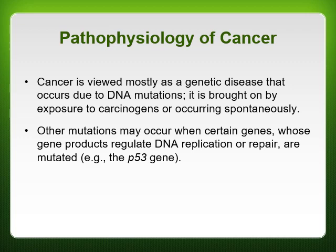As far as pathophysiology goes, cancer is viewed mostly as a genetic disease that occurs due to DNA mutations, brought on by exposure to carcinogens or occurring spontaneously. We all have cancer cells in our bodies, but they won't necessarily grow out of control. If they continue to mutate or are exposed to carcinogens that cause them to start growing, that's usually the problem. Other mutations can occur when genes that regulate DNA replication or repair get mutated — an example is the p53 gene, associated with cancer onset in an individual.